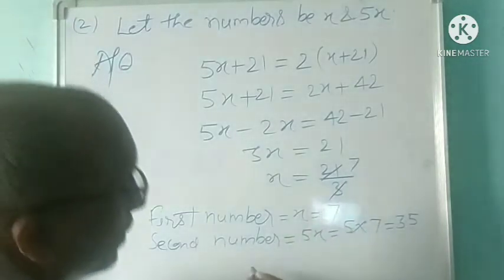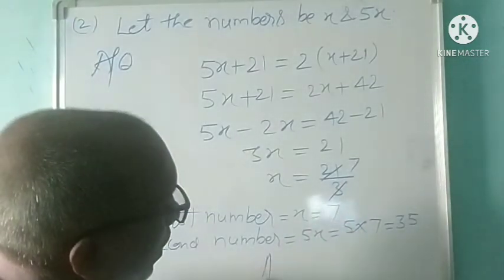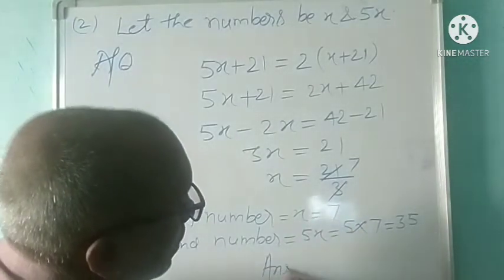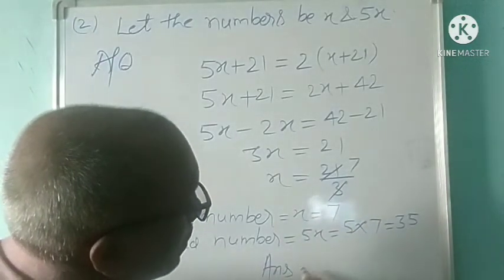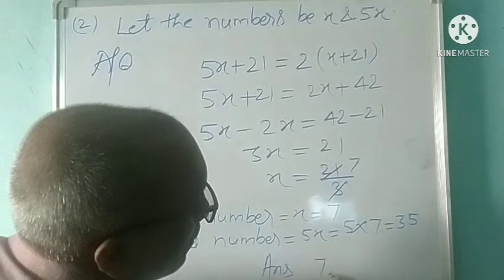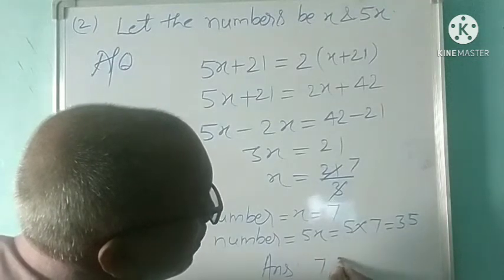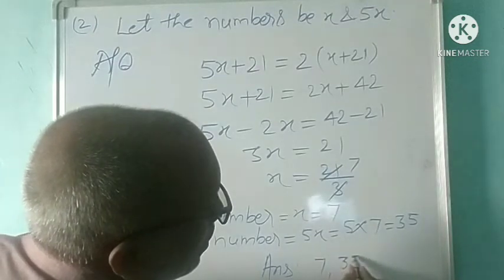The two numbers are 7 and 35. Answer: 7 and 35.